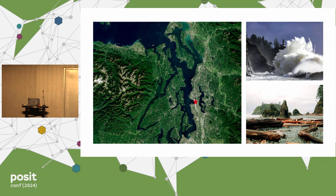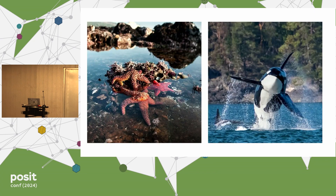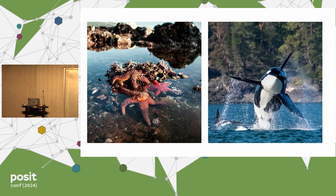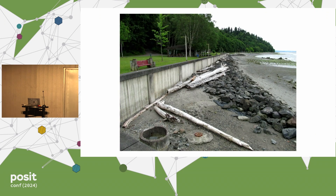We have tall coastal bluffs that erode and provide sediment, wide high-energy ocean-facing beaches, and an incredibly rich nearshore ecosystem that contains everything from sea stars and cnidarians to our big charismatic orcas. We also have an incredibly developed shoreline. Humans have been in this area for about 13,000 years. When Western settlers came in the 1800s, shoreline modification changed at a very high rate, and these modifications interfere with natural processes including erosion, beach building, and habitat formation.